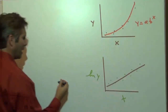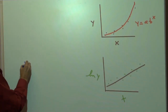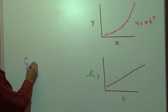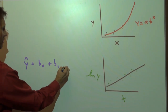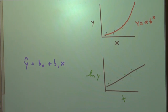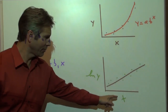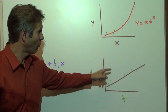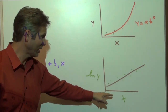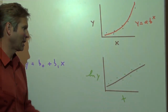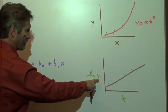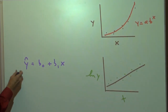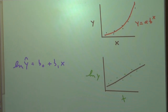This line of best fit is going to be y-hat equals b-sub-0 plus b-sub-1 times x. But hold on — it's not really relating x to y like this graph is. It's relating x to the natural log of y. So that regression line isn't predicting y; it's predicting the natural log of y.